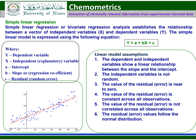Simple linear regression, or bivariate regression, establishes the relationship between a vector of independent variables and dependent variables. The simple linear regression model is expressed using the following equation: y = a + bx + error term, where y stands for dependent variable, x stands for independent variable, a stands for the intercept, b stands for slope or regression coefficient, and epsilon is the residual or random errors.